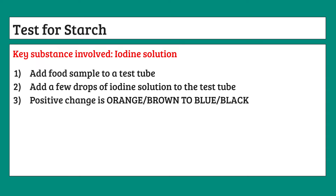Our first test is for starch. For all biological molecule food tests, there is a key substance that helps you determine if the molecule is present. For starch, that substance is iodine solution. Add the food sample to a test tube, then add a few drops of iodine solution. The positive result — meaning starch is present — is a color change from orange/brown to blue/black. Note that the color for iodine has a couple of different interpretations.